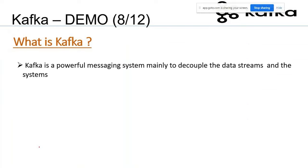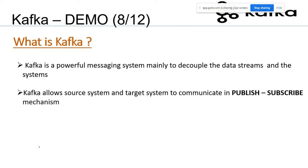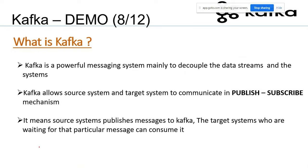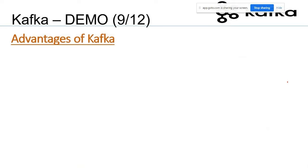Kafka is a powerful messaging system mainly to decouple data streams and systems — there is no direct coupling between source and target systems. Kafka allows source and target systems to communicate in a publish-subscribe mechanism. The source system publishes messages into Kafka — these are called producers. The target systems that consume those messages are called consumers. Let's now look at the advantages of Kafka.